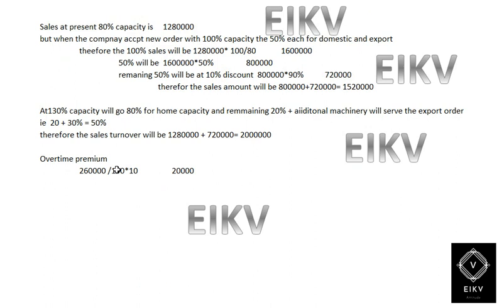The total labor cost for 130% capacity will be $2,60,000 and the overtime will be $2,60,000 divided by 130% multiplied by 10, which is the 10% that gives you $20,000. Thanks for watching this video. If you find this video helpful, please subscribe.